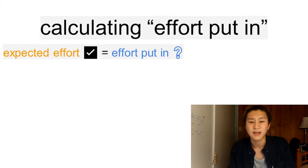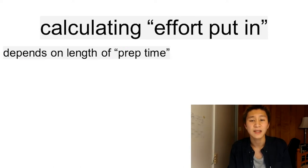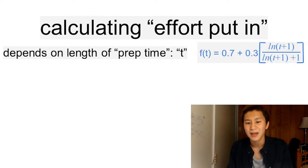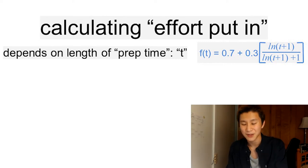There's obviously many factors at play, but the most important is arguably the time one spends to prepare beforehand, which we will represent with the variable t. Again, this is incredibly subjective, but I chose to represent effort put in as a function of time spent preparing, f of t is equal to 0.7 plus 0.3 natural log t plus 1 over natural log t plus 1 plus 1.